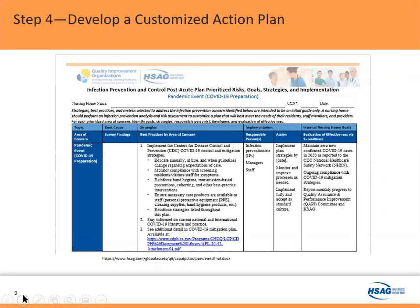Once you've done your assessment, you're likely going to be faced with some opportunities for improvement. In eight years as an infection preventionist, I've never gone out looking for problems and not found some. Under this action plan — which our company has developed for pandemic events, antibiotic stewardship, vaccination, and more — you put your survey findings from state, federal, or your own assessment, and correlate those to best practices. Make sure you reflect your local and state recommendations as well, and always assign responsibility. The people who hold staff accountable are a crucial part of any improvement activity.